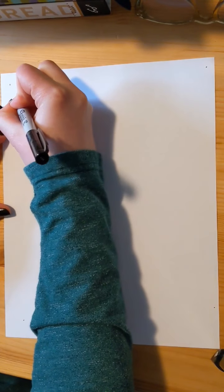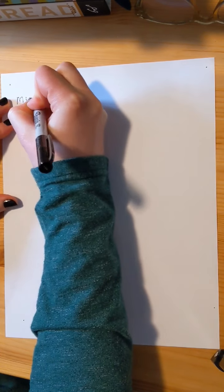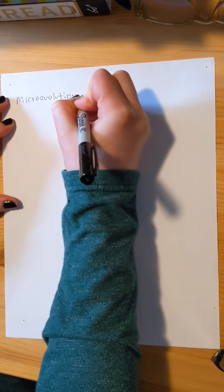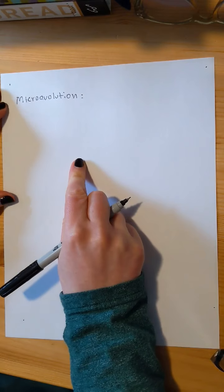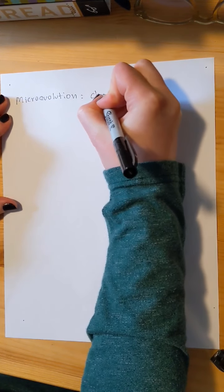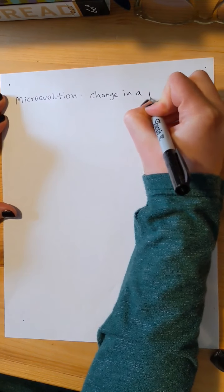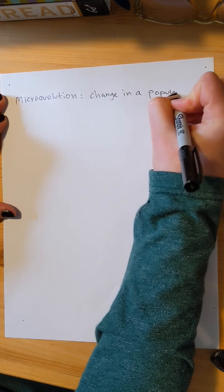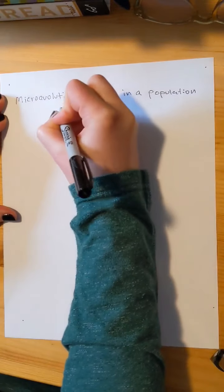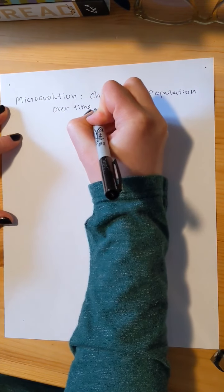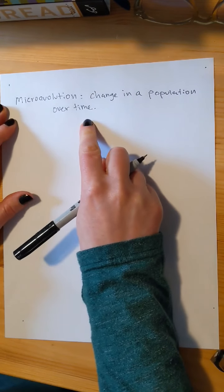Alright, so we're going to talk about the different types of evolution today. There is microevolution, and microevolution is change in a population over time.